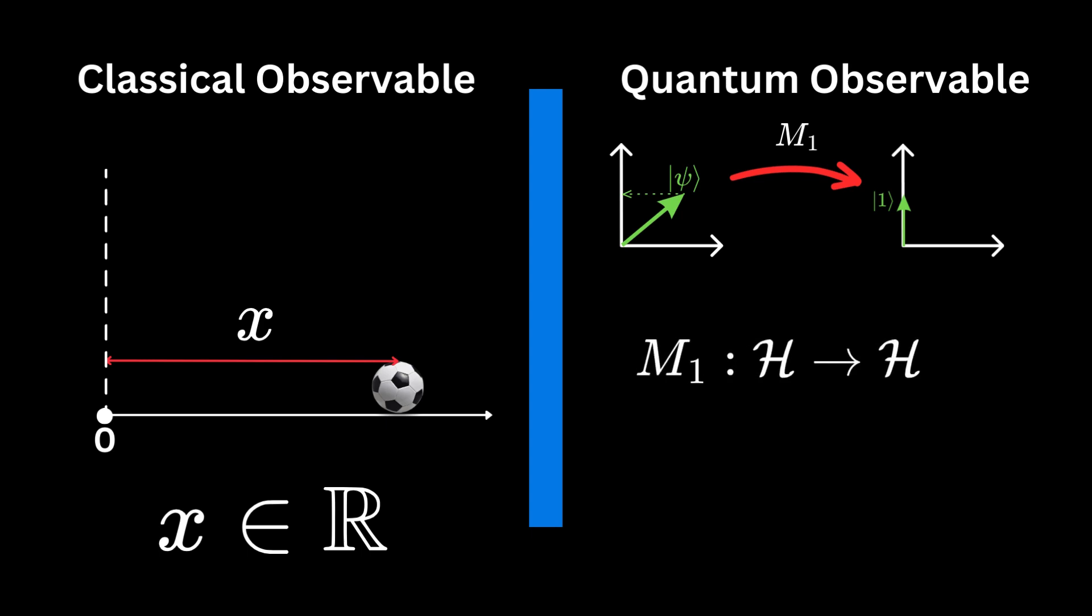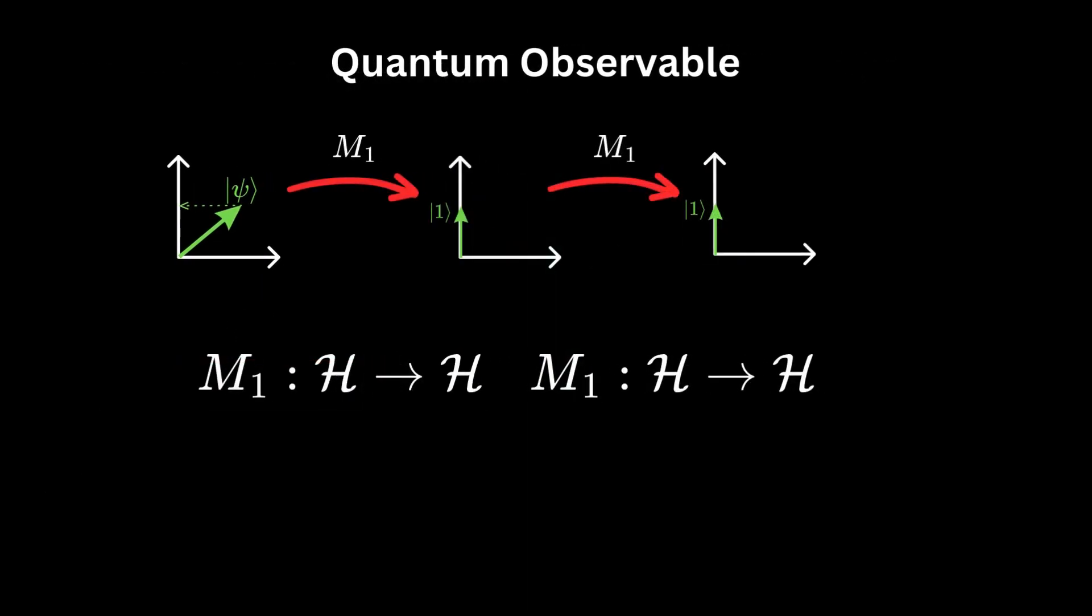If we aim for precision, we should describe it as a projection, which is a linear map from a Hilbert space onto itself. Further application of the M1 operator does not change the vector 1, because M1 is a projection operator. This demonstrates how certain operators in quantum mechanics can leave specific states unchanged, highlighting the unique properties of quantum states.